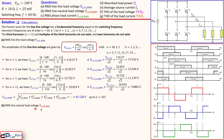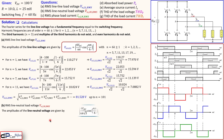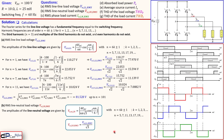For question B, the RMS line-to-neutral load voltage: the amplitude of each line-to-neutral harmonic is the line-to-line amplitude divided by √3. So you can take the total RMS line-to-line value and divide by √3 directly. Going up to n=101, this gives 47.0407 volts.